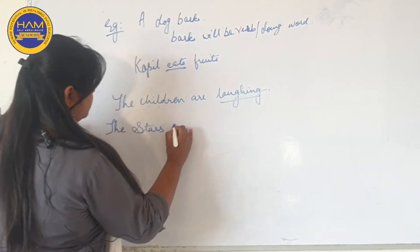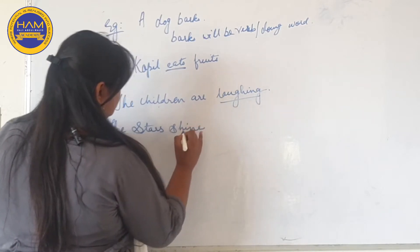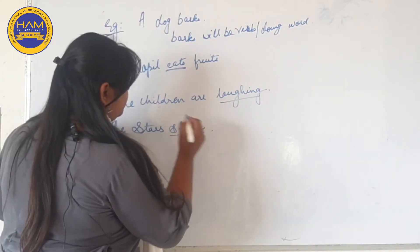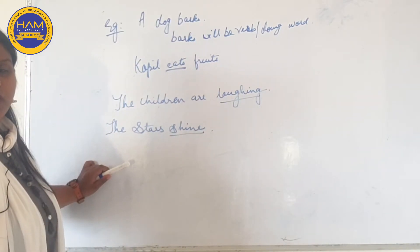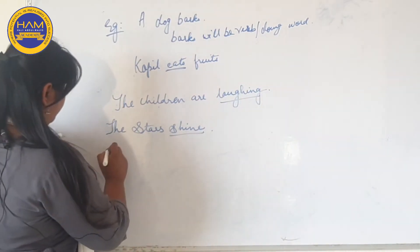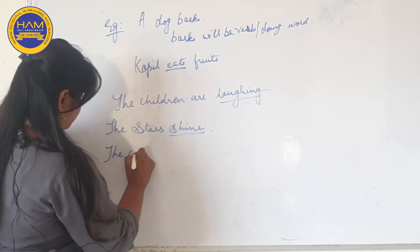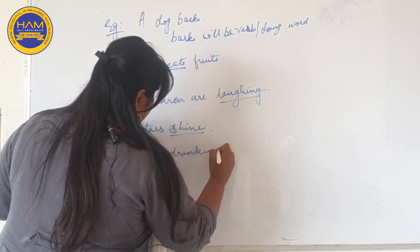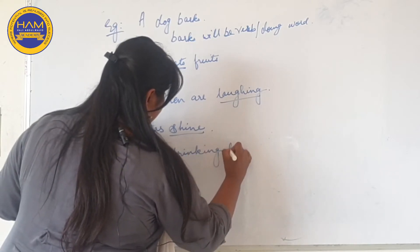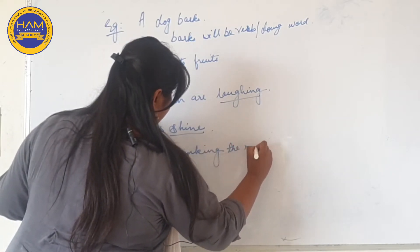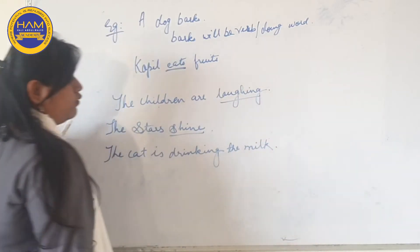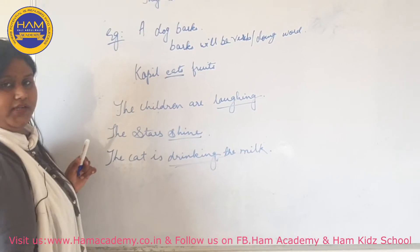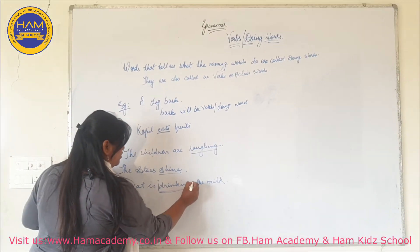The stars shine. What do the stars do? Stars shine. So 'shine' will be the verb. The cat is drinking the milk. What is the cat doing? The cat is drinking milk. So here 'drinking' is a verb.